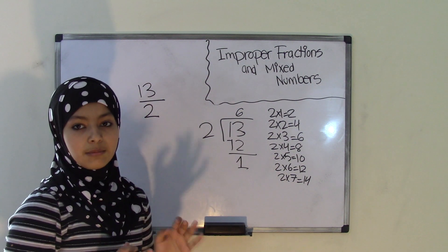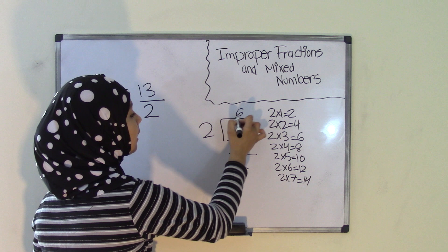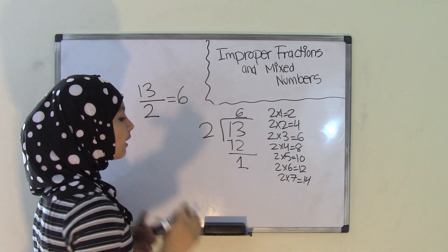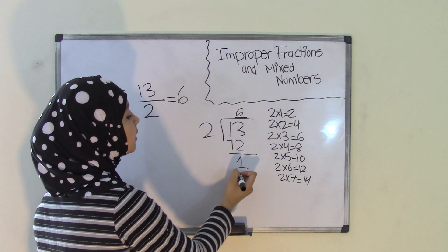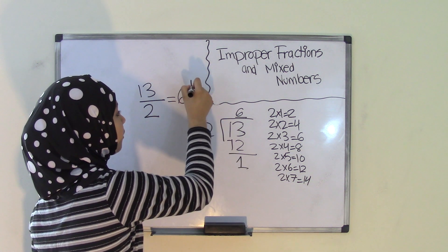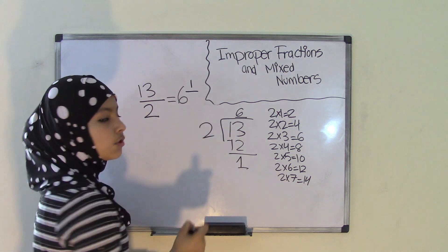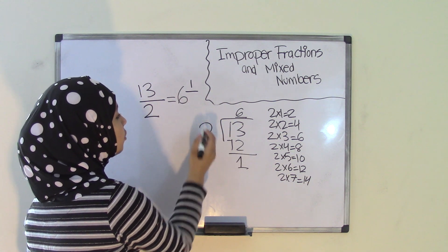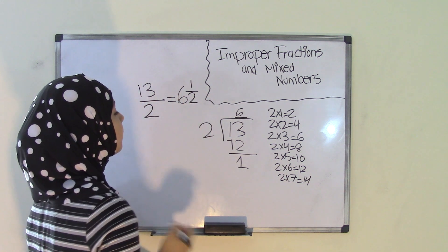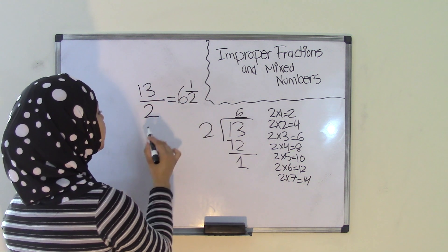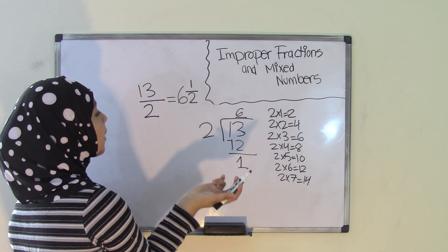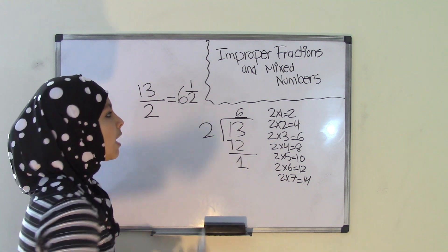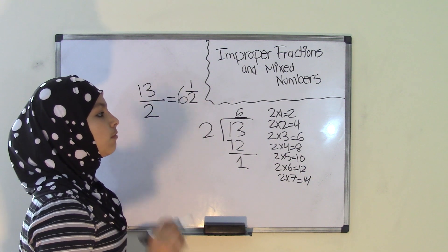Now you need to put this in a mixed number. You do that by taking your quotient, which is 6, and that becomes your whole number. Your remainder, which is 1, is going to be your numerator. And your denominator is going to be your divisor — the number you divide by — which is 2. So that means 13 over 2, which is an improper fraction, converted into a mixed number equals 6 and 1 over 2, or 6 and a half. That's how you convert an improper fraction into a mixed number.